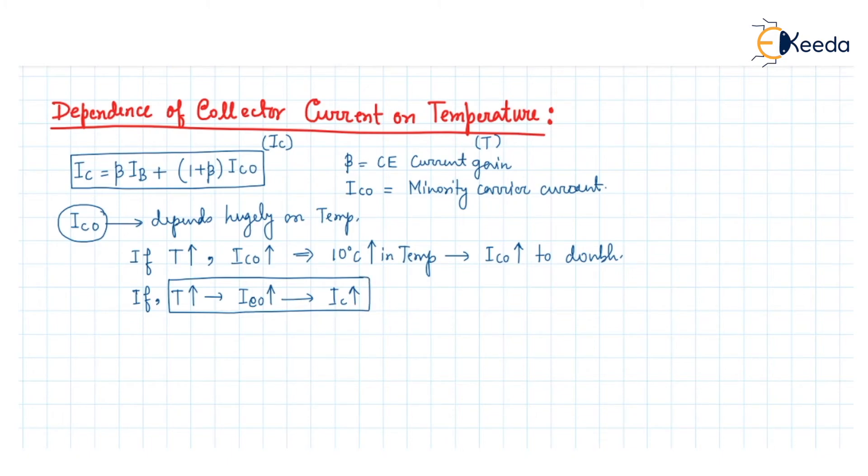Because the IC current has an ICO term which depends on temperature, the IC current can increase. In this way, the collector current depends on the temperature of the bipolar junction transistor.